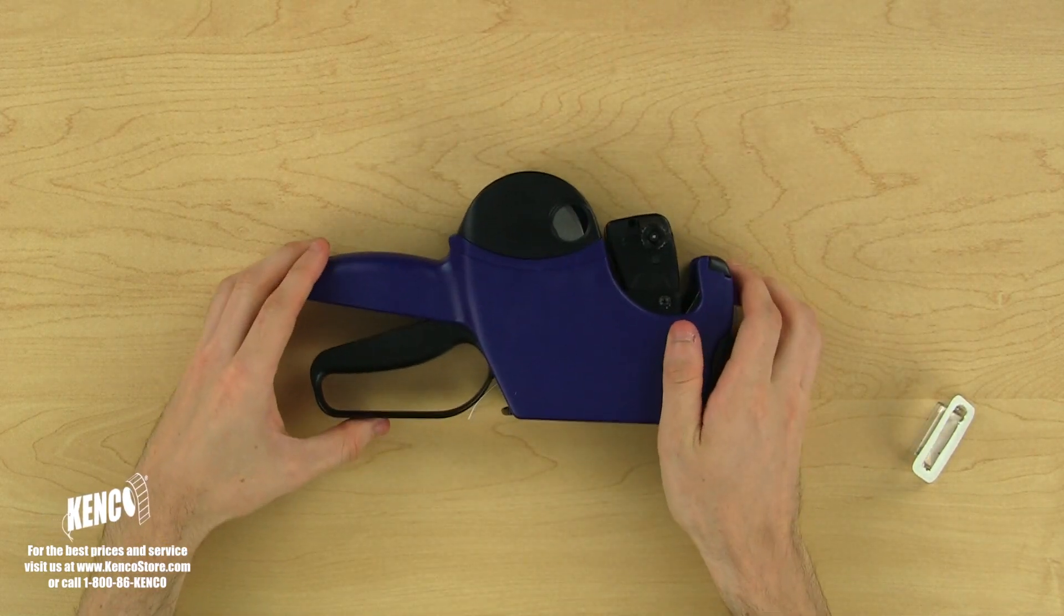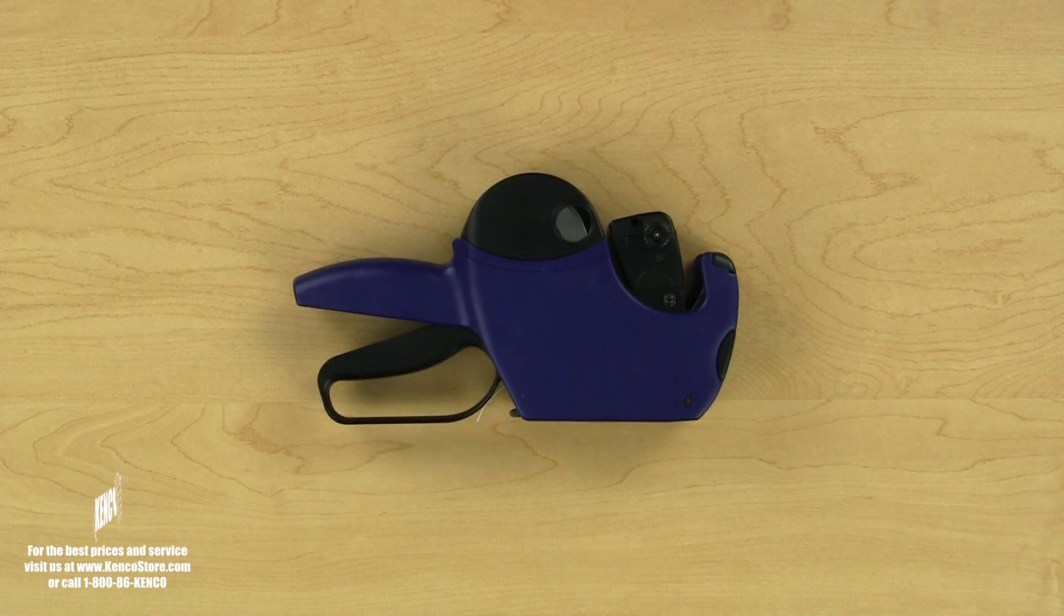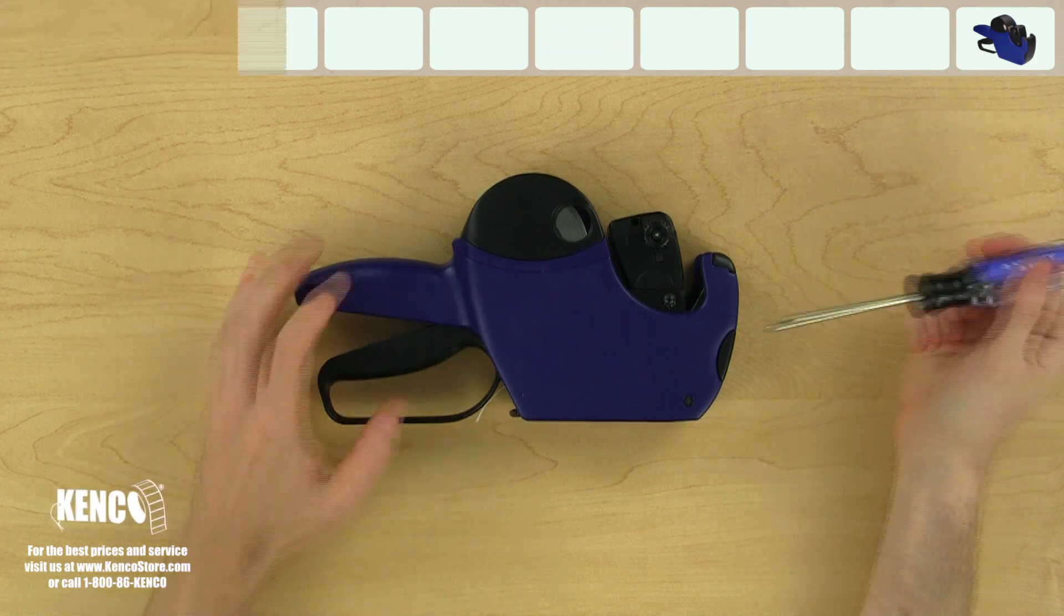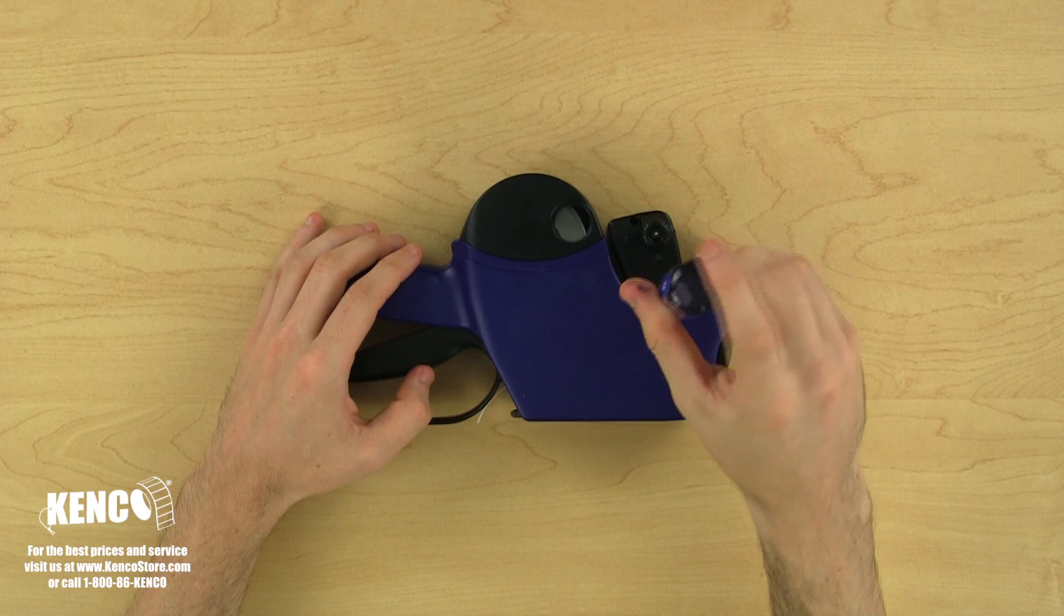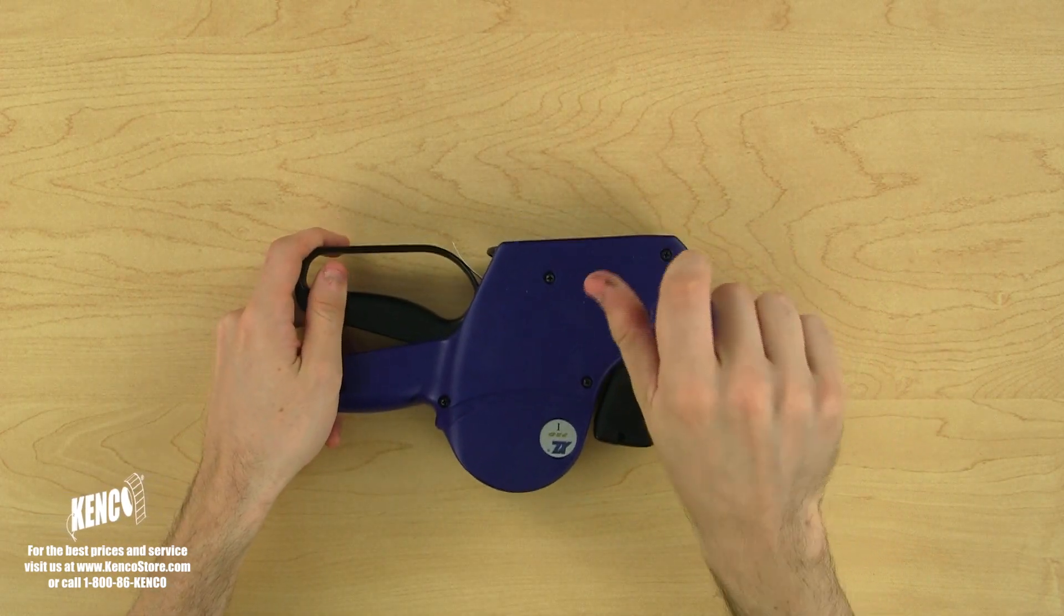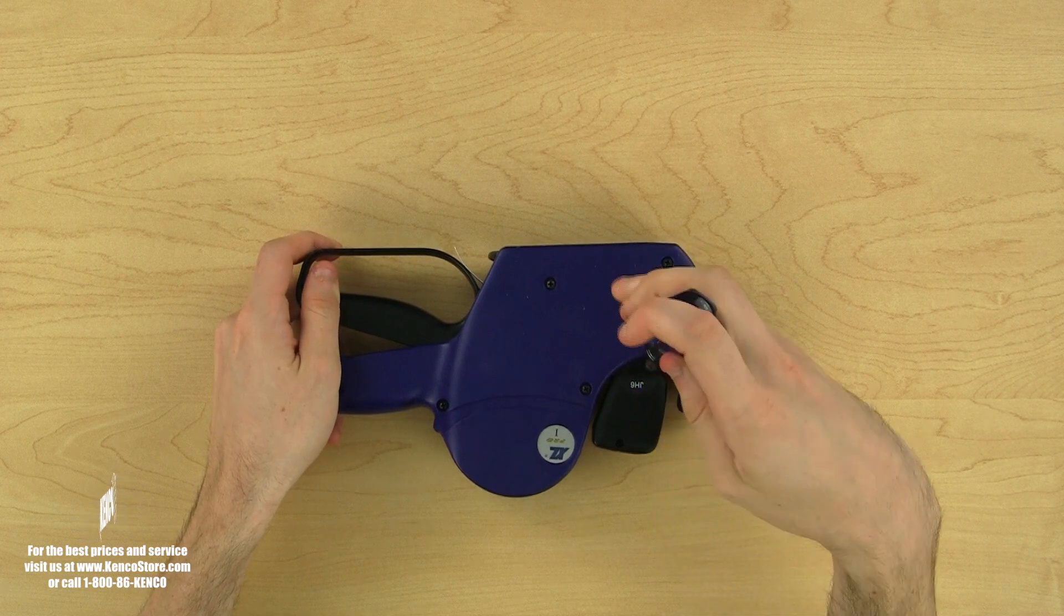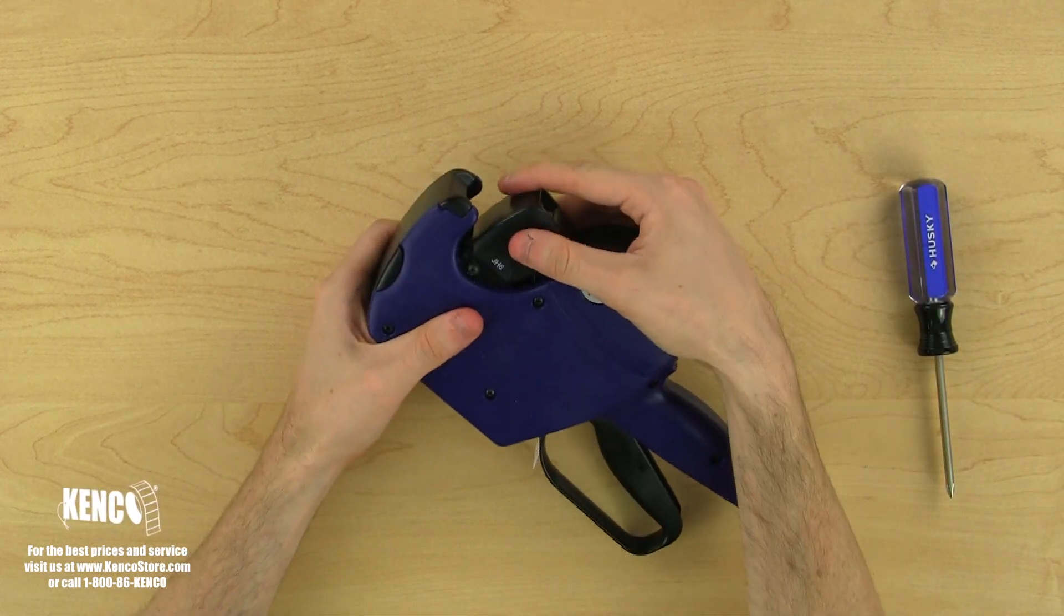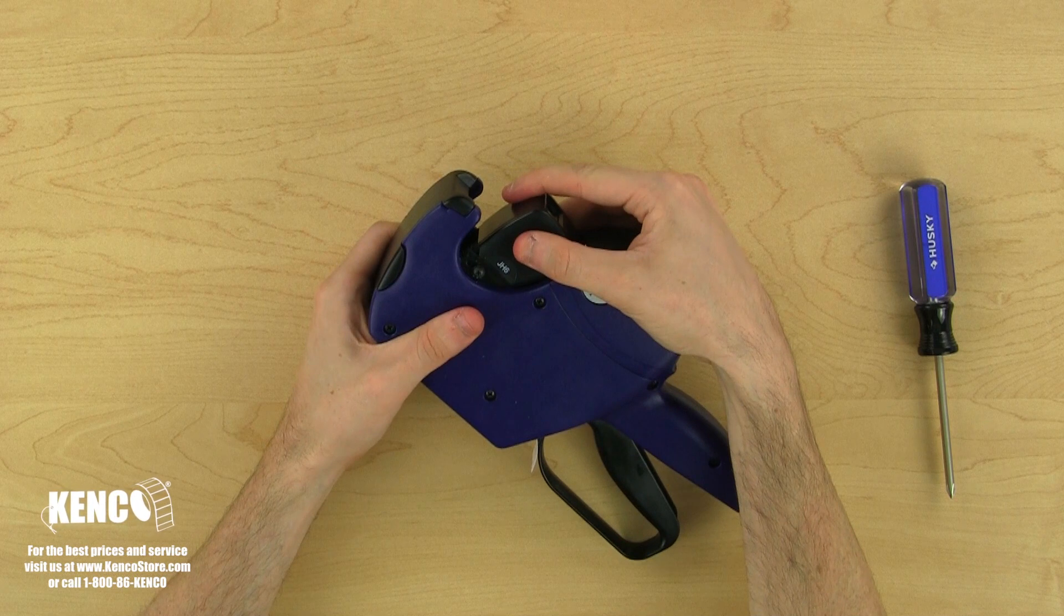Next, I'm going to show you how to adjust the print location if needed. For this part of the tutorial, we're going to need a Phillips screwdriver, size PH1. First, we'll need to loosen up the two print head adjustment screws located on both sides of the print head. You'll only need two turns in a counterclockwise direction to loosen up each screw. Take care not to loosen the screws too much, as this may damage your pricer.